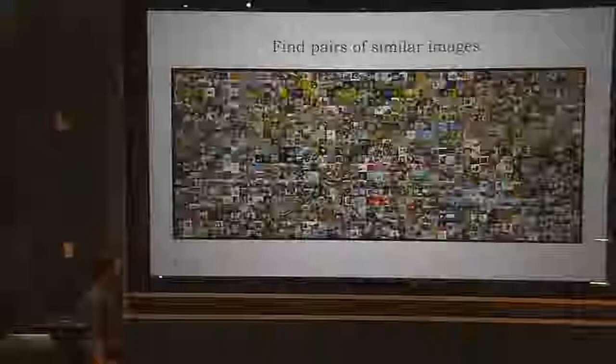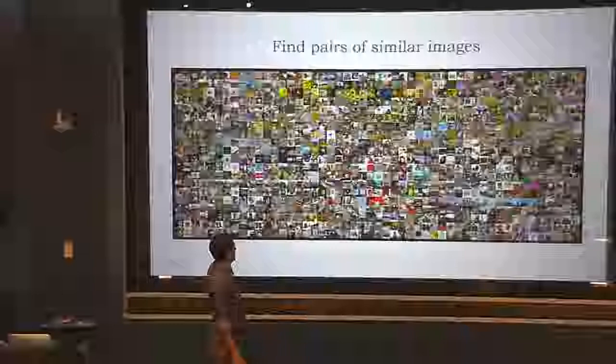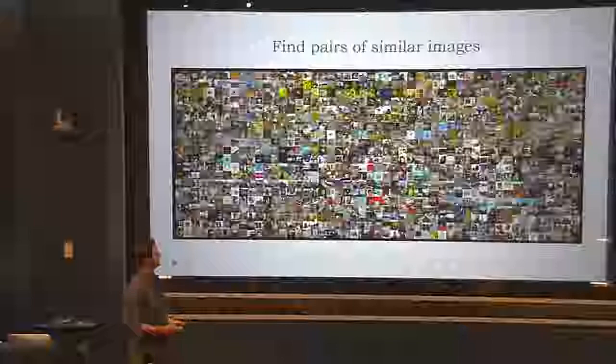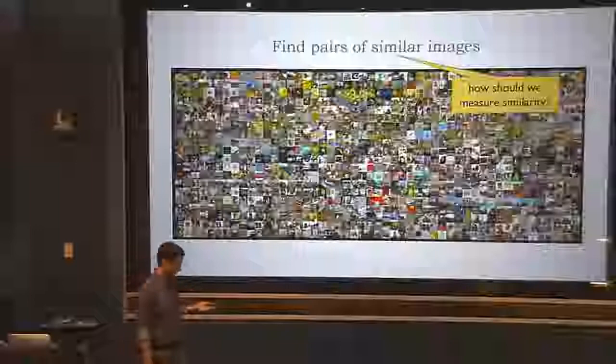Let me introduce the problem. This is one instance where we're given a database of images — just a few images taken from a very popular database called ImageNet. The question here is finding similar images: if you want to cluster, you want to find all the pictures that have rivers, oceans, or animals. The question is how to find all the pairs of similar images. One question I should discuss is how should we measure similarities between images — how do we actually decide whether they are similar or not?